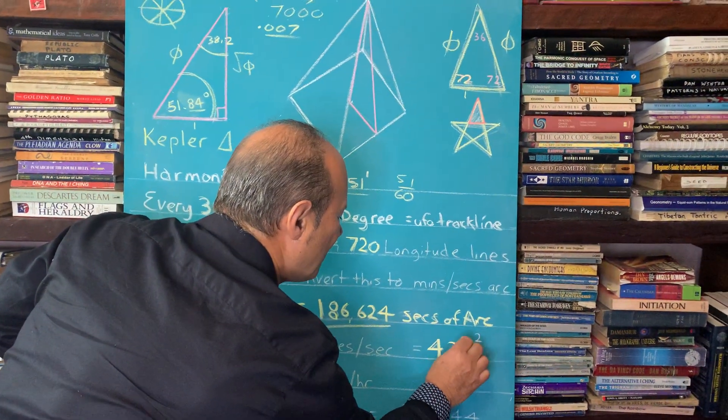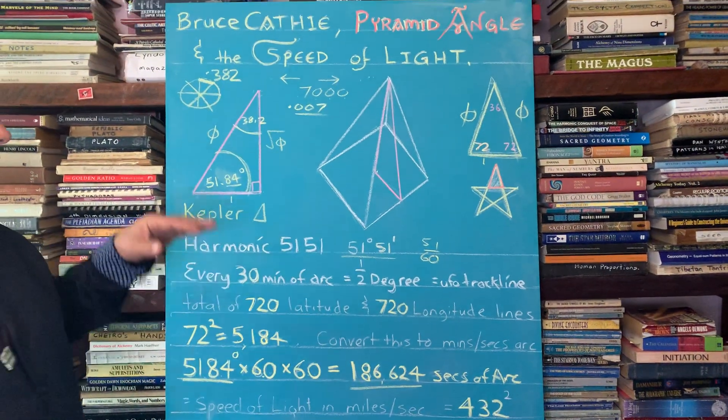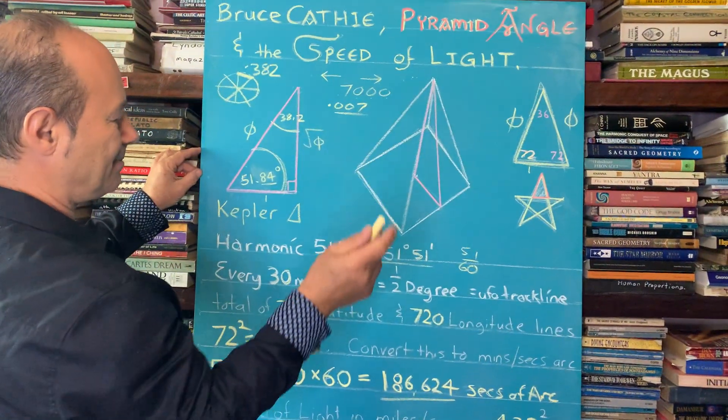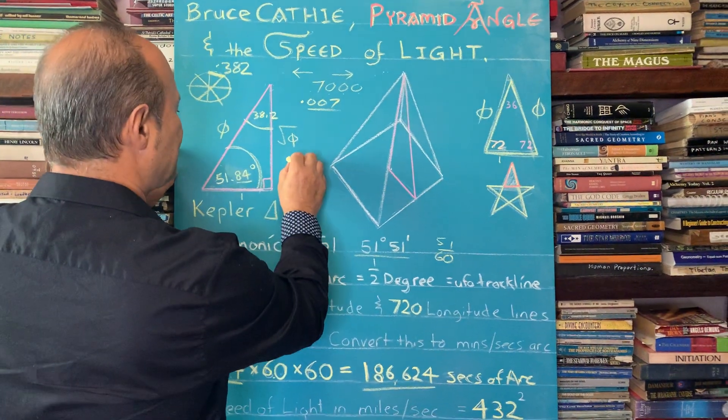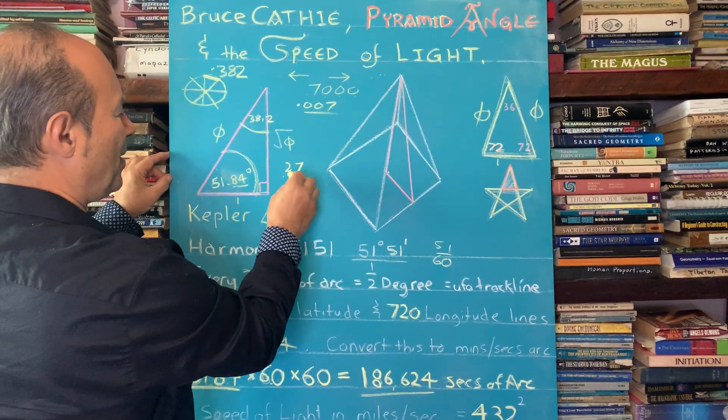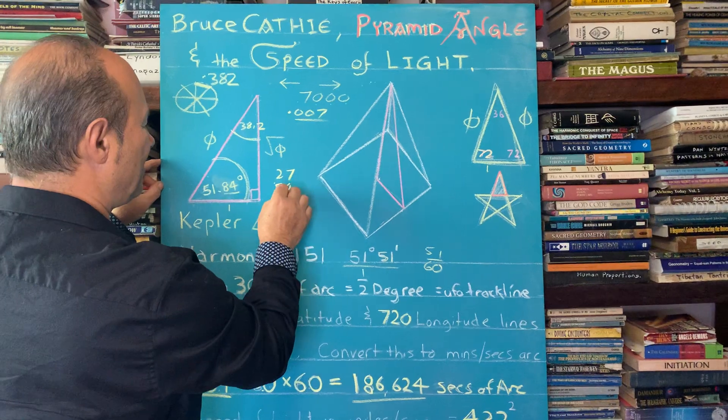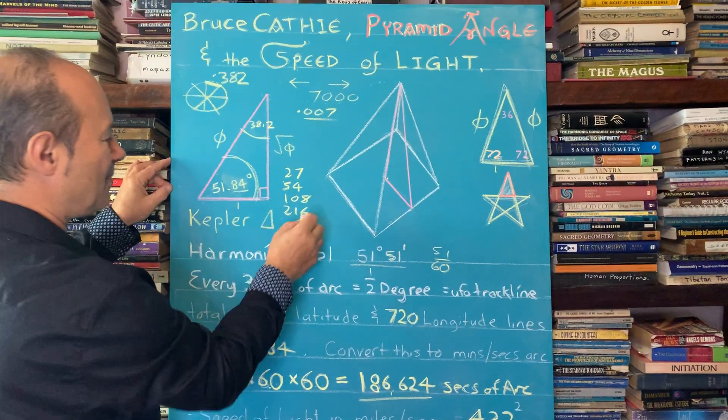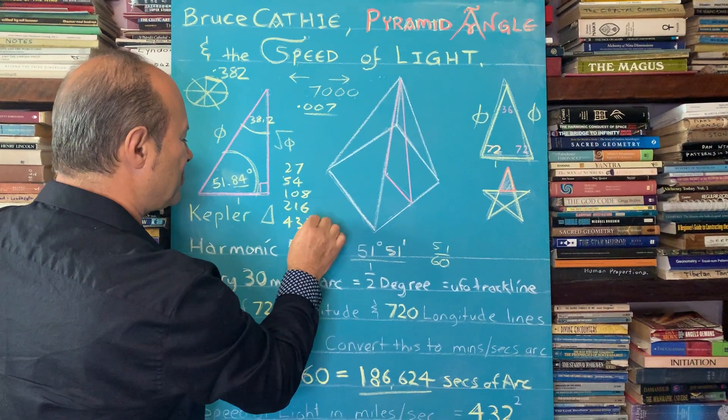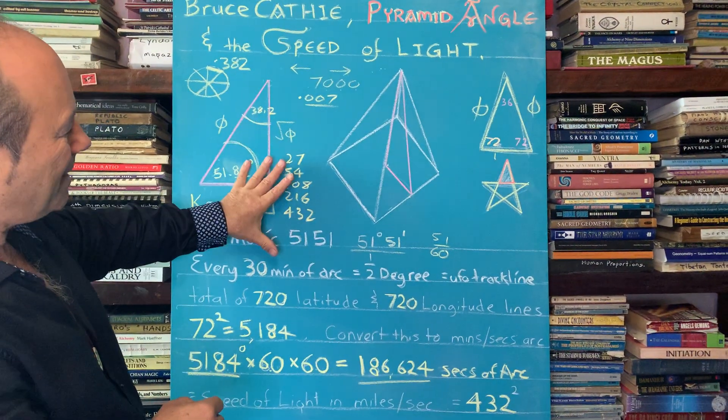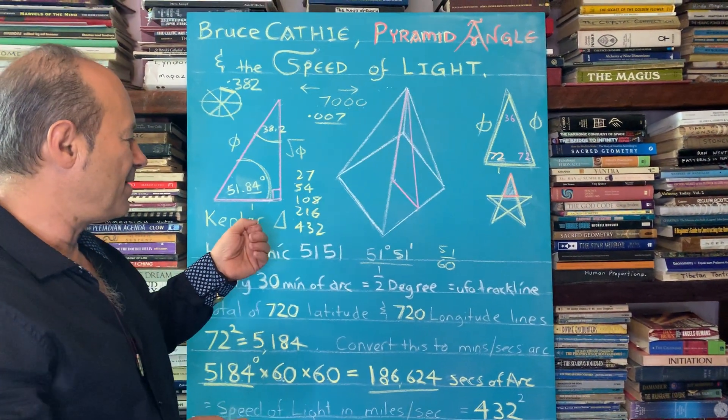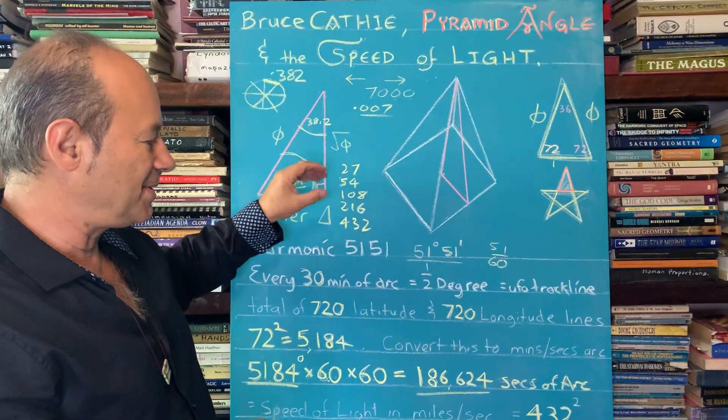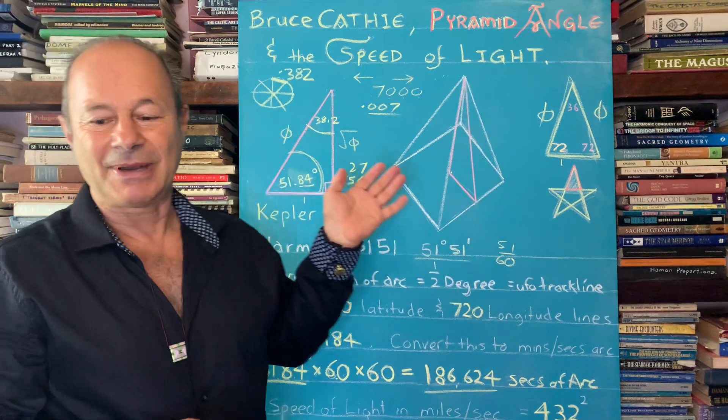As you know, 432 is another really important number. If I take the number 27, which is triple nine, I double it, it's 54, double it, it's 108, double that it's 216, and double 216 is 432. It keeps going on and on. All these numbers are a binary code, a doubling sequence. They're very important numbers in astronomy, the distances of the planets from the Sun.